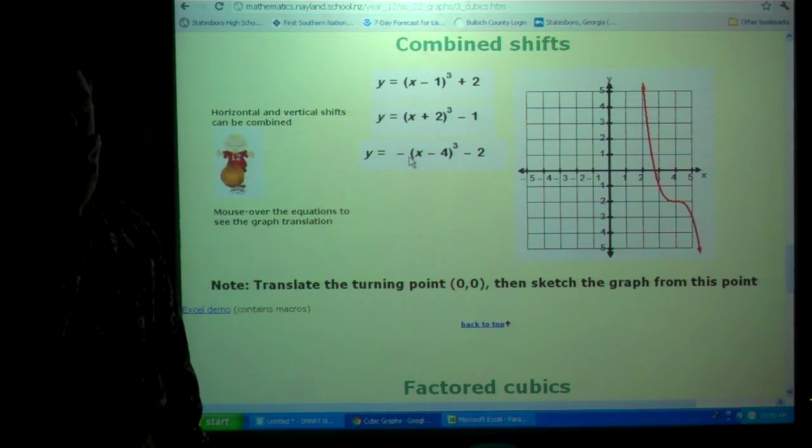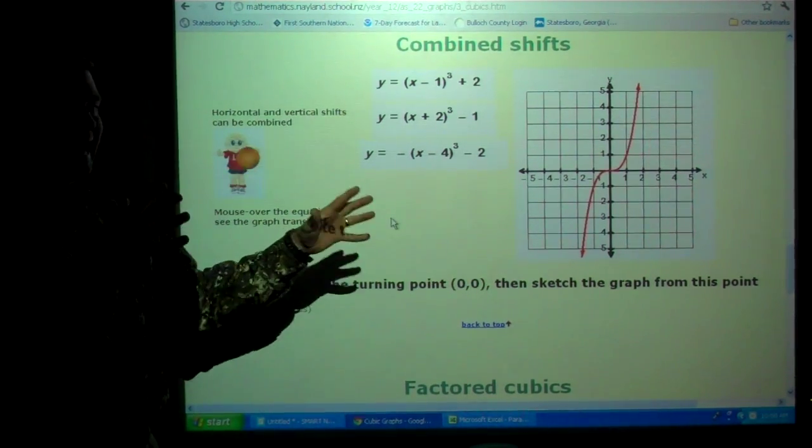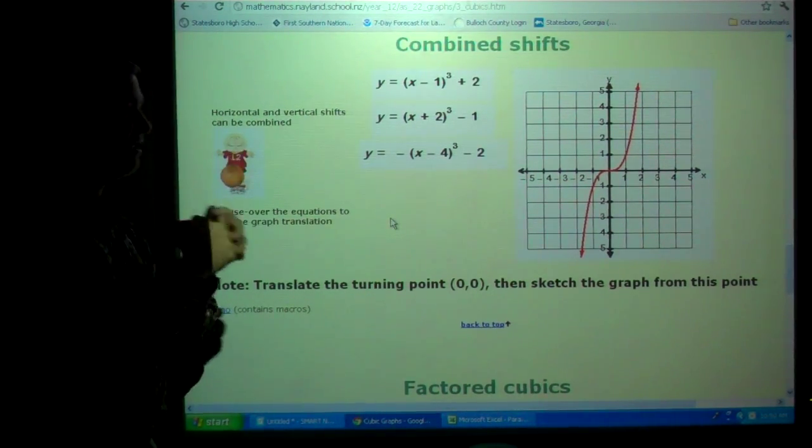Question? If they just gave us the graph, how would we know that it equals the equation? You have to know that that graph, when it looks like that is a cubic. That that is a cubic graph.